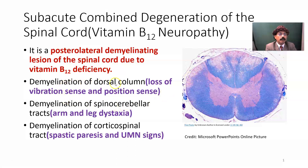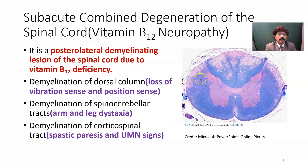Demyelination of the dorsal column will cause loss of vibration sense and position sense. Demyelination of the spinocerebellar tract will lead to arm and leg dystaxia. Demyelination of the corticospinal tract will lead to spastic paresis and upper motor neuron lesion.